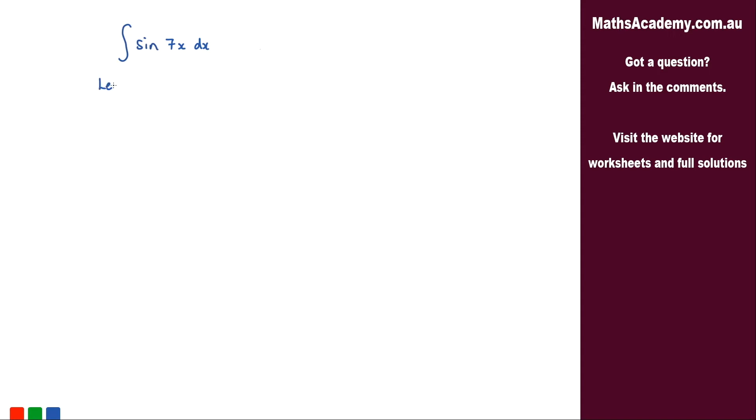So we're going to have let u equal 7x. Now I'm going to differentiate that, so du by dx is going to be equal to 7. And then by simply rearranging this we can find out what dx is.